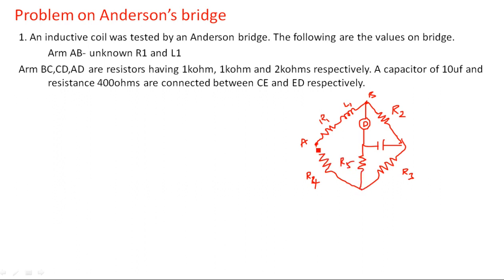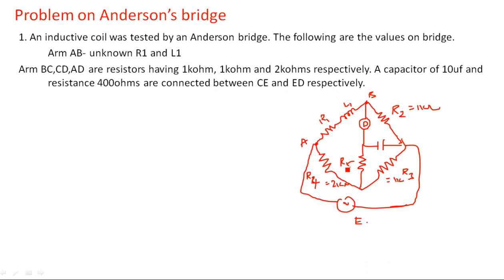The input supply E is connected between two nodes. Now let us substitute the given values: BC is R2 = 1 kΩ, R3 = 1 kΩ, R4 = 2 kΩ, the capacitor C = 10 microfarad, and R5 = 400 ohms. This is the circuit diagram. For such questions, always focus on drawing the circuit diagram correctly.